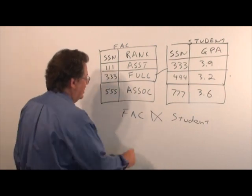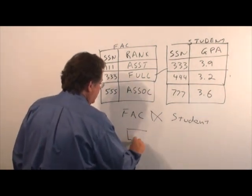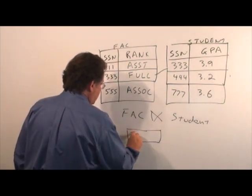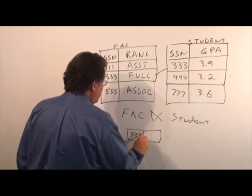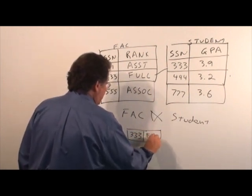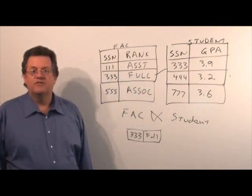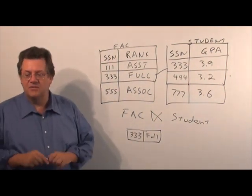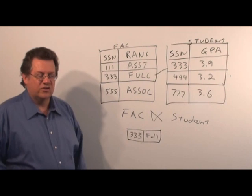So, in this case, we would get, as a solution, social security number 333 and the rank of full professor. Okay, that's an example for faculty semi-join with students.